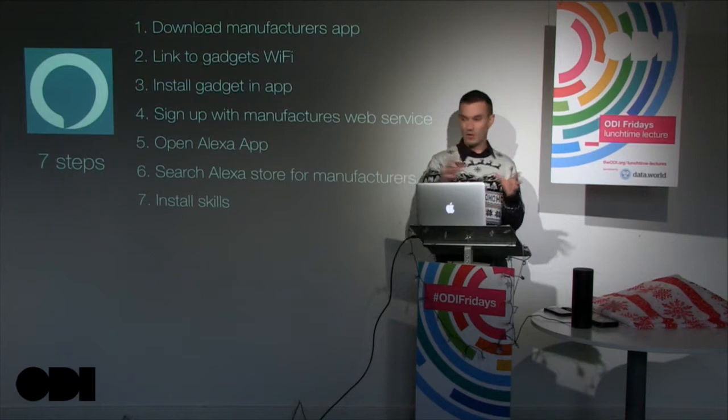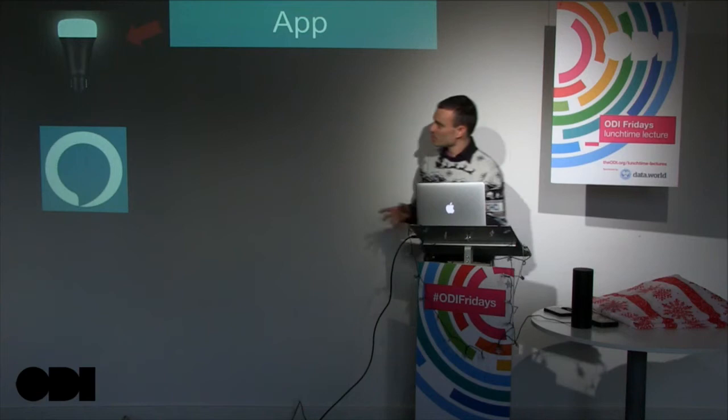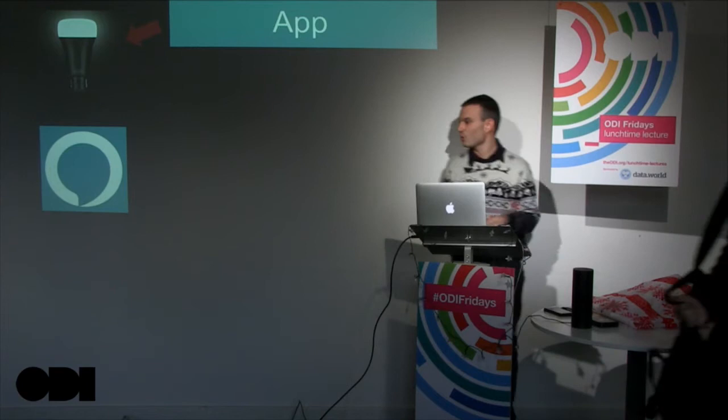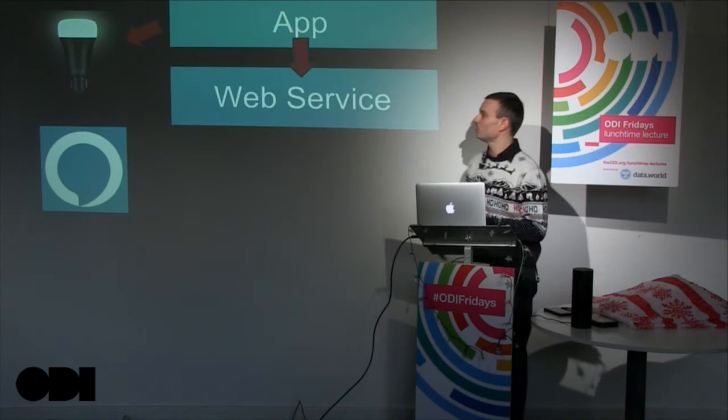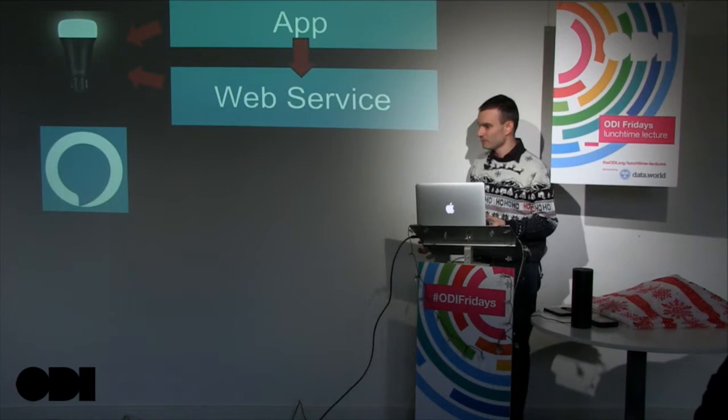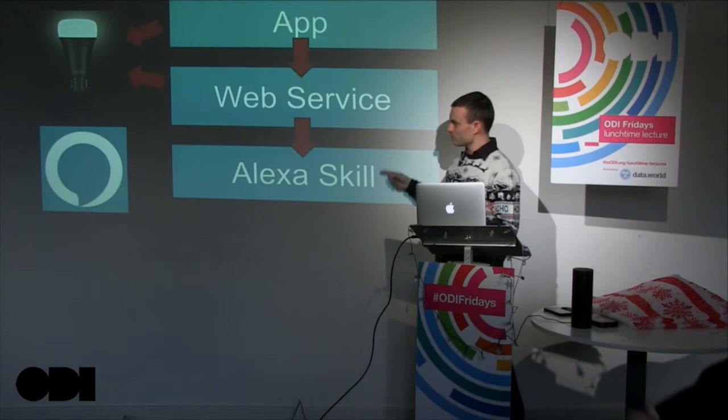Seven steps — any one of these has the potential to go a little bit wrong, and then you don't know where you've got to or what to do next. Typically with a lot of these systems, you have the app that connects to the device and can control it. In order for it to work with Alexa, you have to connect that to a web service. That web service can then also control the device — you tell Alexa and it does it. Then you connect it to an Alexa skill, and that finally connects to Alexa.